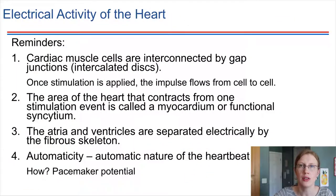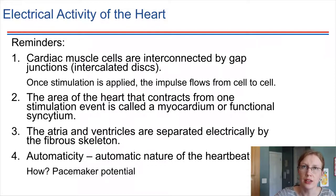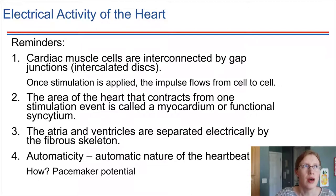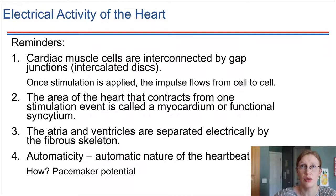Number one: cardiac muscle cells are connected by intercalated discs. Those are gap junctions that provide a direct connection between cells. So if there's ion flow going on in one cell, that ion flow is able to transmit directly into the adjacent cell due to these special types of connections in cardiac muscle cells.